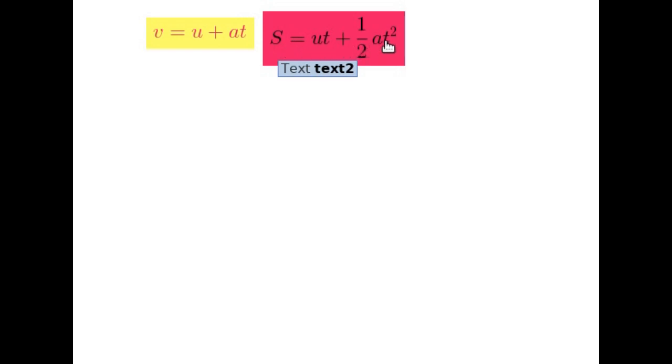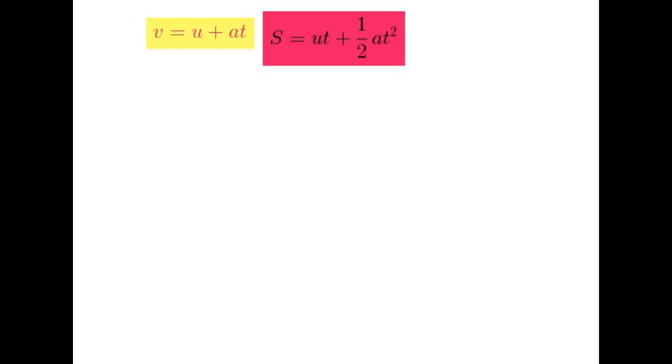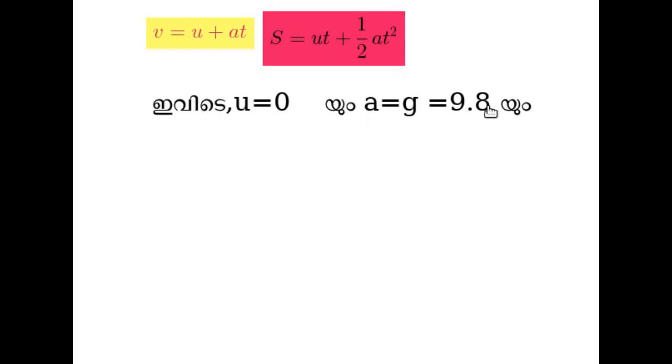V is equal to u plus at. S is equal to ut plus half at squared. We are going to study the physics class.